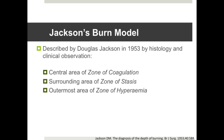You can't really talk about burns without talking about Jackson's model. This was described in 1953 via clinical observation as well as studying the histology of burns. It was found that there are three zones to a burn. The central area is the zone of coagulation, otherwise known as the zone of coagulative necrosis. This is where the tissue is closest to the heat source, and in this area there is rapid cell death. Surrounding this is the zone of stasis.